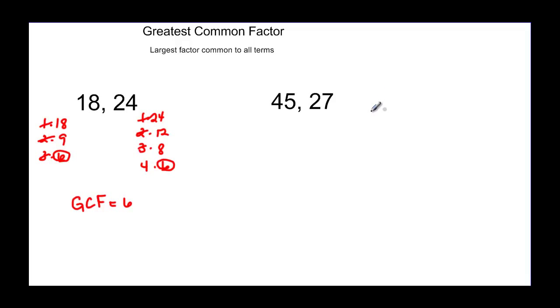Let's try again. 45 would be 1 times 45. Now you might be able to do some of these just in your head. And 2 doesn't go in because it's not even, but 3 does. 3 times 15 is 45. 4 doesn't. 5 does. 5 times 9, and then 9 would be the next factor.